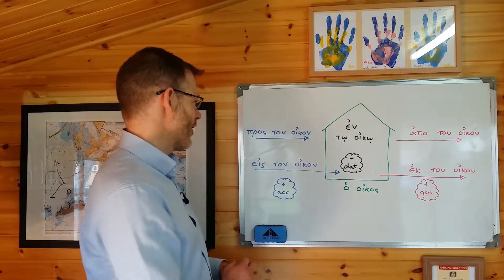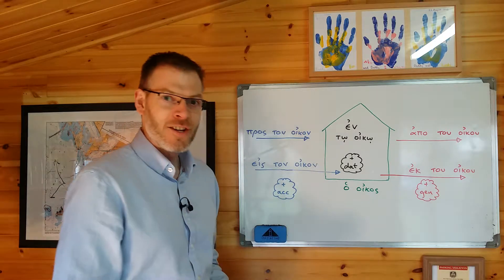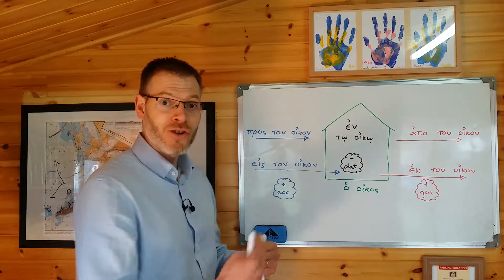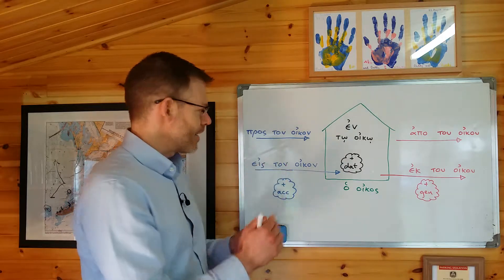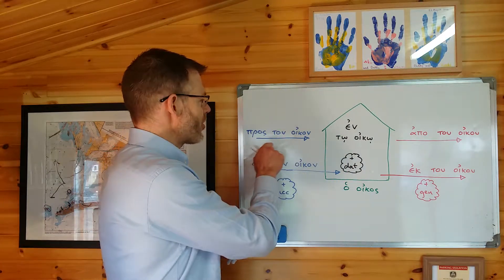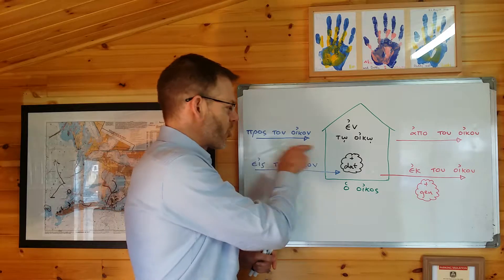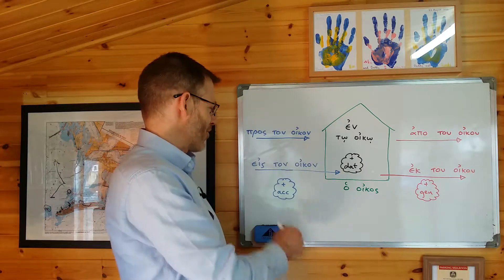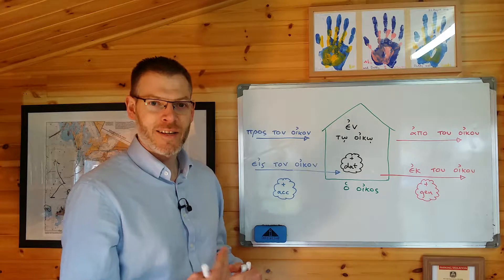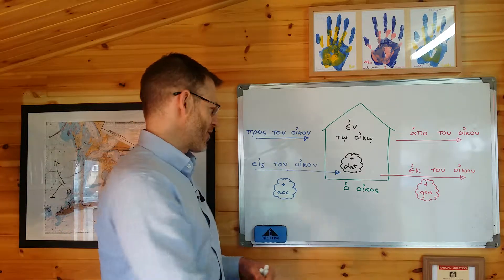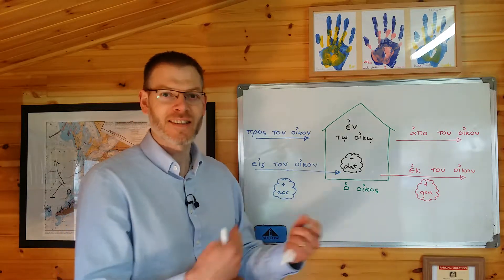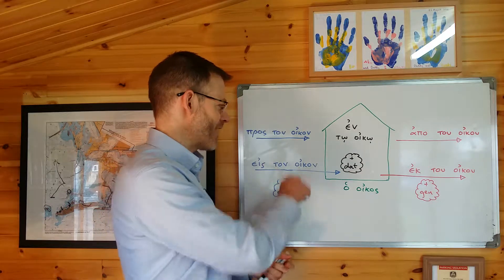Let me go through them one at a time. First, pros, meaning 'to' in the sense of towards something — motion towards something or looking towards something. Pros ton oikon: the arrow is going towards the house. Eis means 'to' but more like in the sense of 'into.' So eis ton oikon means 'into the house' — somebody's going into the house, eis ton oikon.